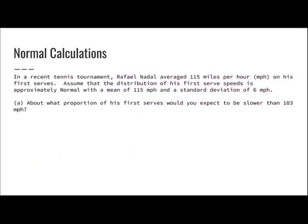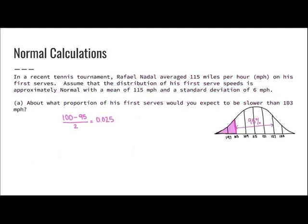Here's another example. In a recent tennis tournament, Rafael Nadal averaged 115 miles per hour on his first serves. Assume the distribution is approximately normal with a mean of 115 miles per hour and a standard deviation of 6 miles per hour. About what proportion of his first serves would you expect to be slower than 103 miles per hour? Note: this asks for a proportion, not a percent. Since 103 is two standard deviations below the mean, I take 95% divided by 2 and get 0.025.